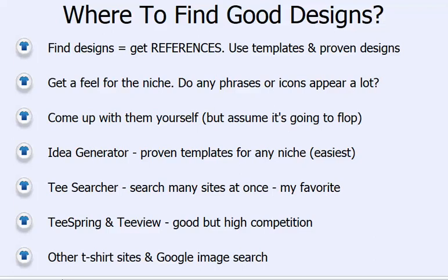The third way is to look at Teespring and TeeVU, which are good in general but there's also high competition, so we need to approach those designs with some care. And then there are other t-shirt sites we can look at manually — some of which are within Tsearcher — but we can also do searches ourselves manually. Some aren't covered within Tsearcher, but we'll cover them in this video. Finally, we can do a Google image search.